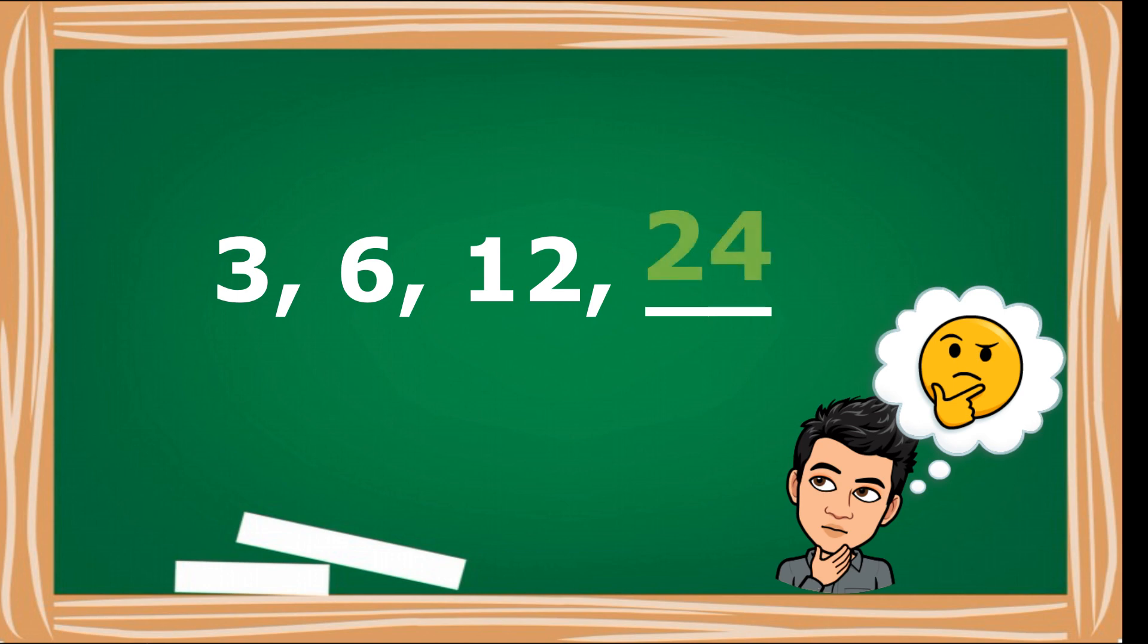The missing number is 24. The pattern, multiply by 2. The missing number is 1. The pattern, divide by 3. Very easy, right?